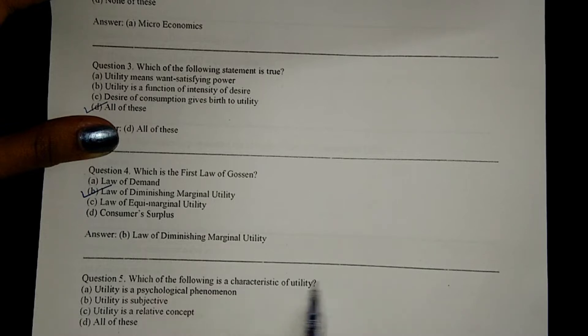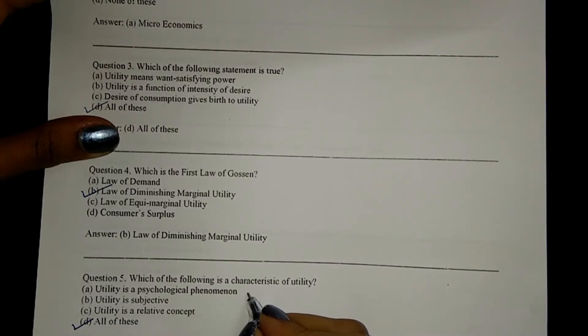Next, which of the following is a characteristic of utility? That is all of these, including A, B, C. How do we calculate marginal utility? So the correct option is A.